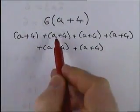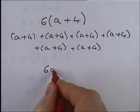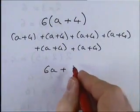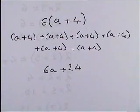Now, if you add up the a's. We've got 1, 2, 3, 4, 5, 6 a's. And if you add up the 4, you've got 6 4's. Well, 6 4's are 24. So, that would be that. Now, you could do it that way.